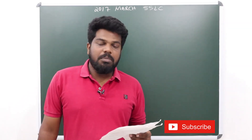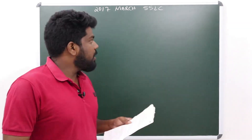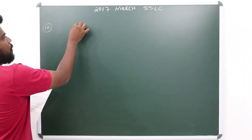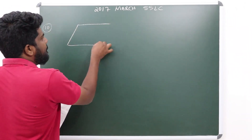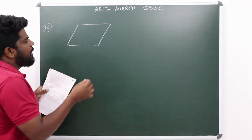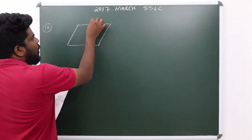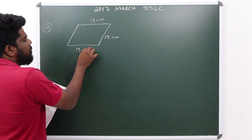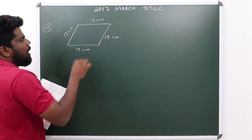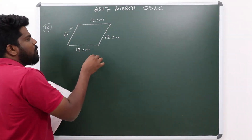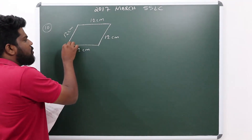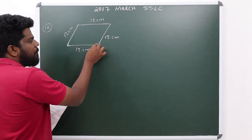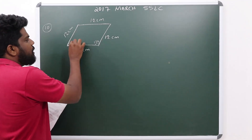This is the rhombus — a samabujja samanthirigam. One side is 12 cm. The other sides are also 12 cm each, since it is a rhombus. One angle is 120 degrees, and the next angle is 60 degrees, giving us a 60-degree angle to work with.